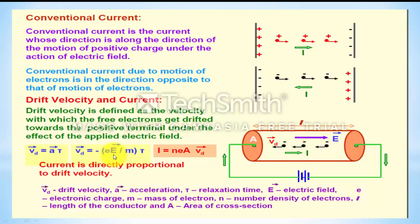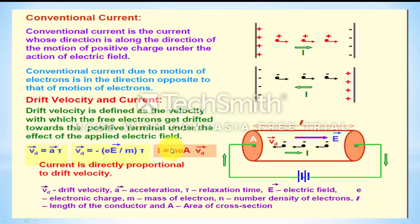Electric field is the amount of force on a unit positive charge. The charge of the electron is e, so the total force will be e into E. Total force by mass equals the acceleration. We can show that current I equals N·e·A·V_D, where N is the number of electrons per unit volume, termed as electron density, and e is the charge of the electron.